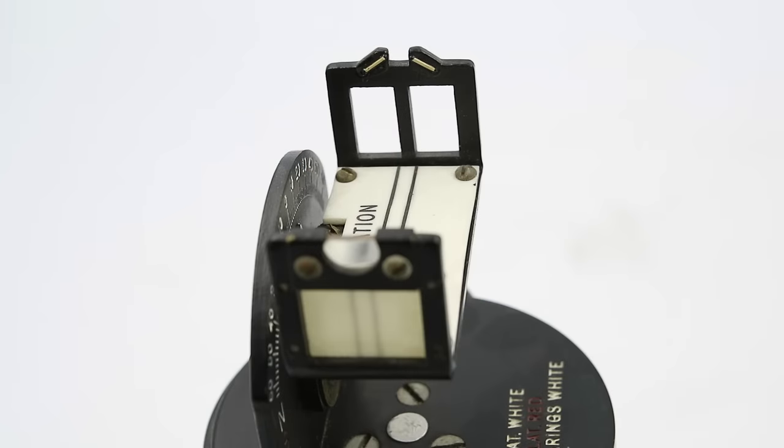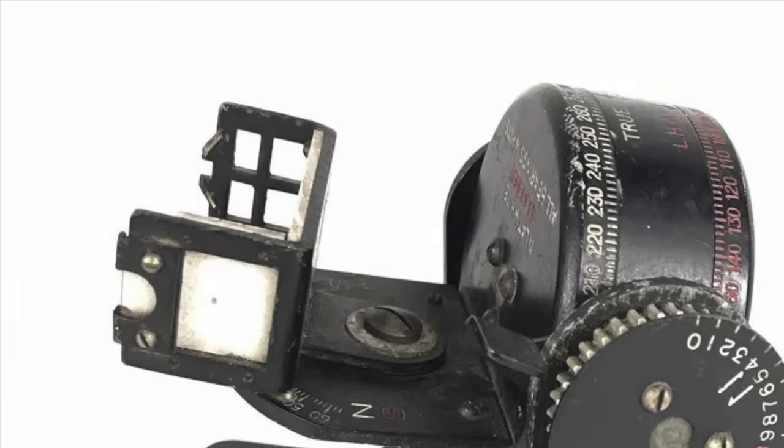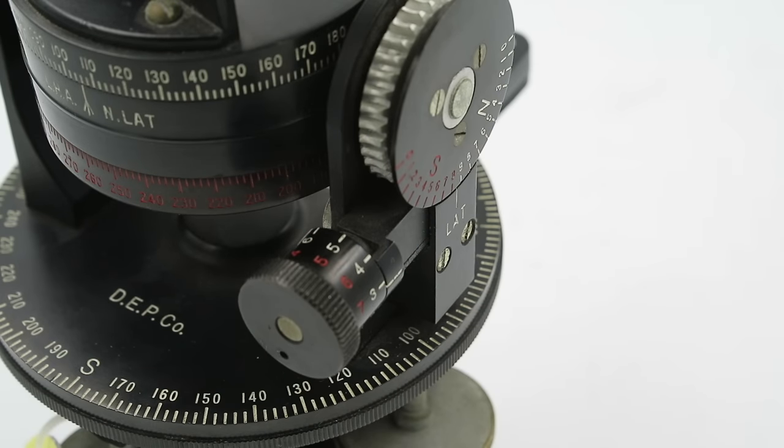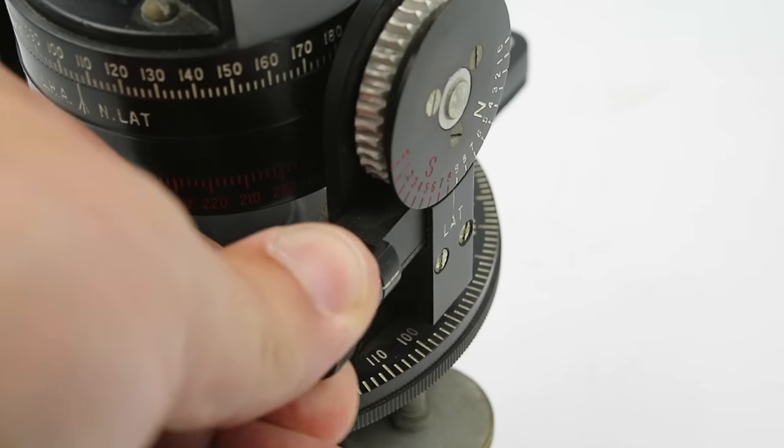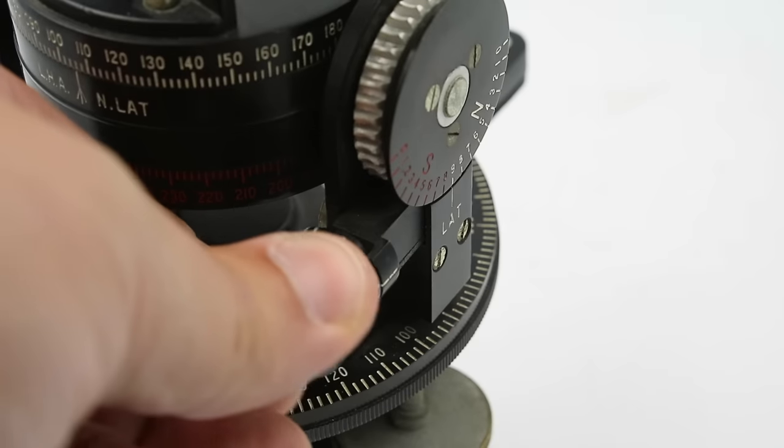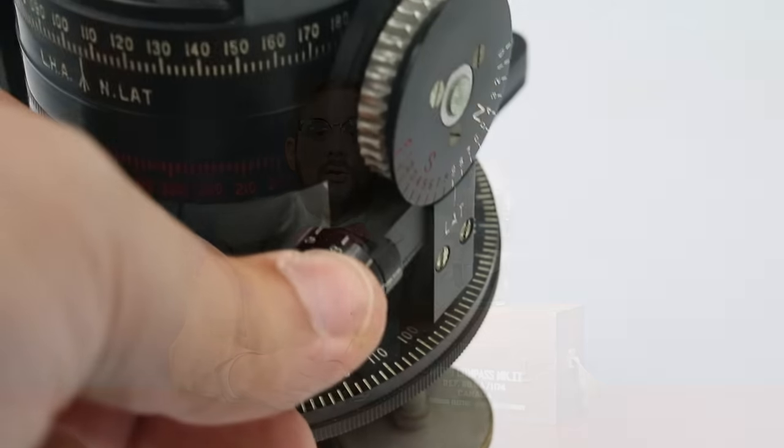Instead of having just a plain post shadow vein it has a cruciform one which was apparently more sensitive at lower latitudes. Also, on the Mark 2 the knob for adjusting the latitude had a locking mechanism where you had to push in the knob in order to rotate it, and on the Mark 2A this was eliminated.